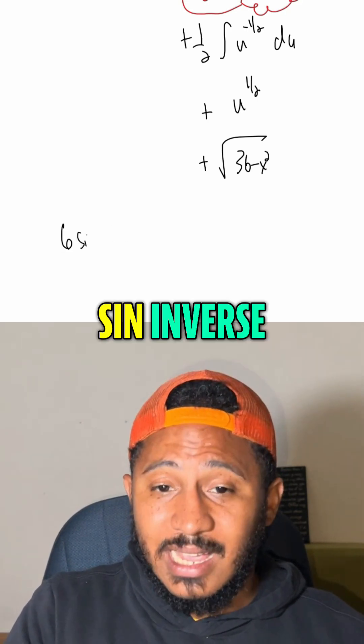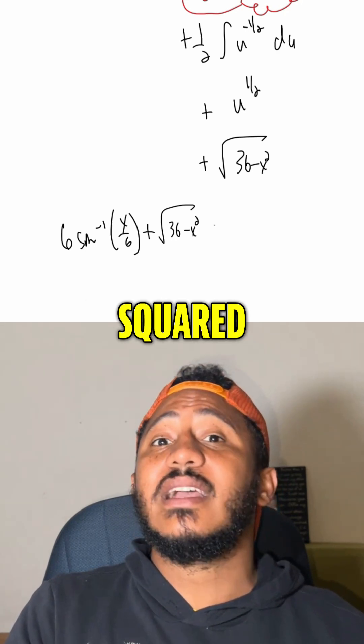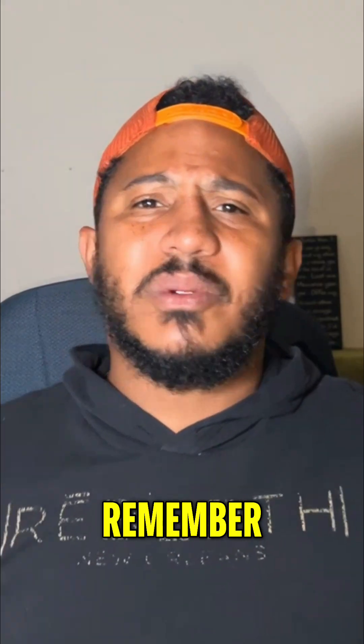And so our full integral would be 6 sine inverse of x over 6 plus that square root of 36 minus x squared. Now that we're done integrating, don't forget the plus C. Always remember, math is everywhere.